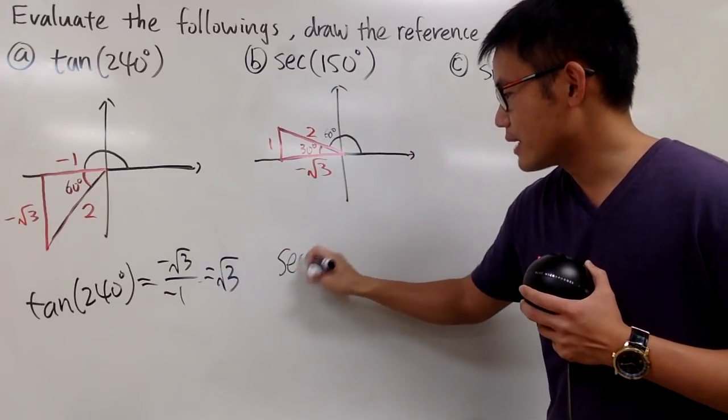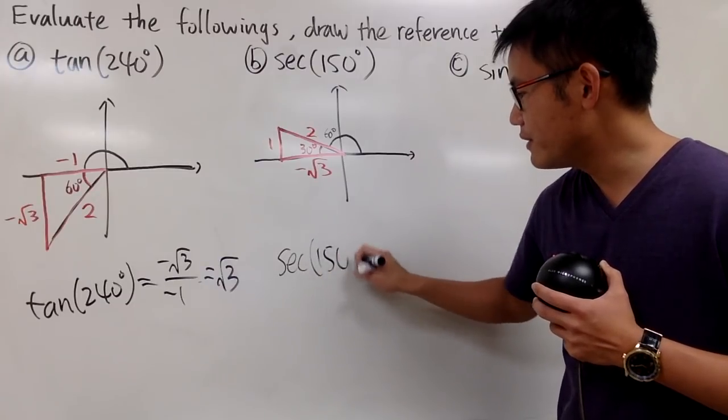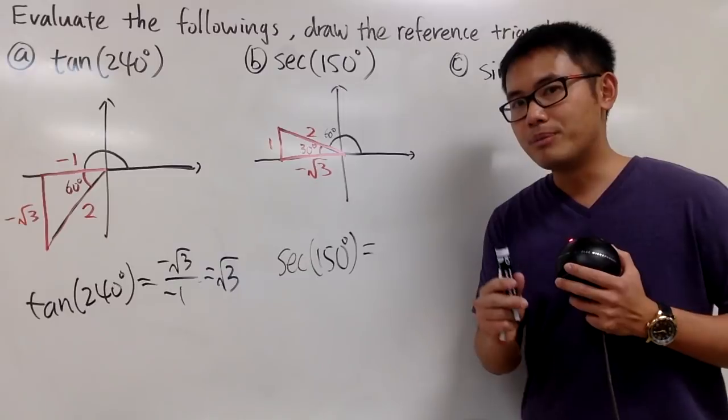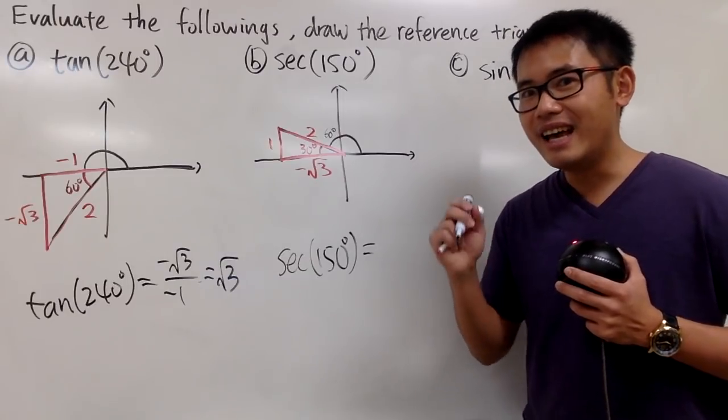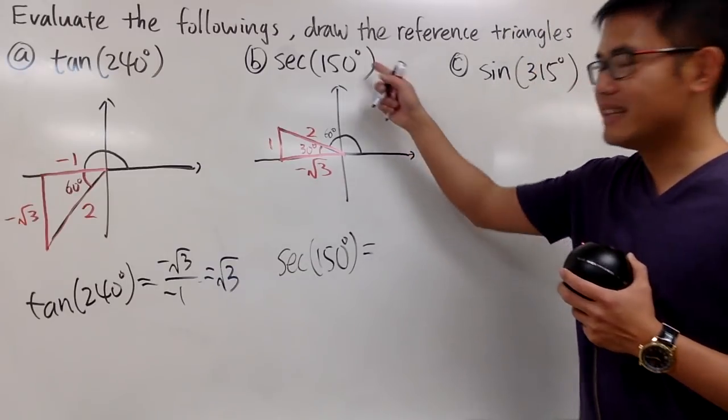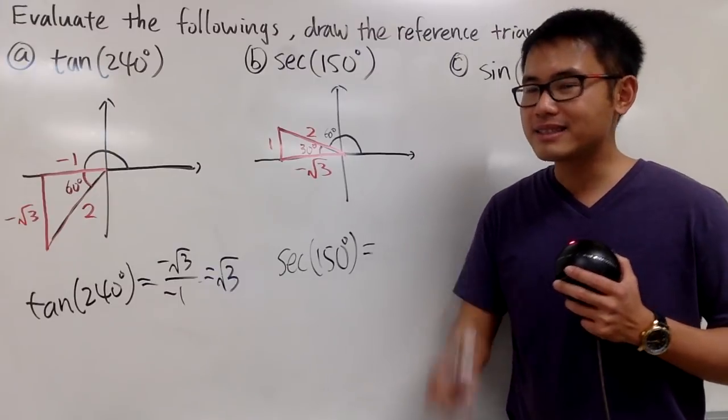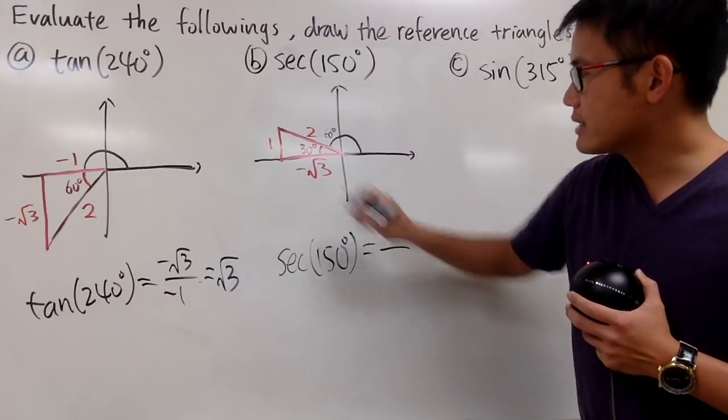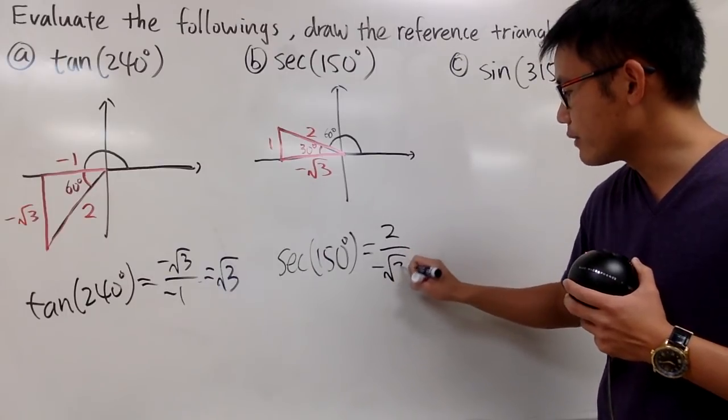Now, secant. We're trying to figure out secant of 150 degrees. This right here is equal to... Remember, cosine is x over r. Secant is r over x. So it's r, that's 2, over x, which is negative square root of 3.